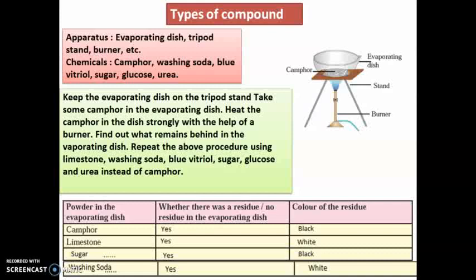First, we heated camphor — there was a residue and it was black in color. Then limestone or washing soda — there was a residue and its color was white. Then sugar — there was a residue and it was black in color. And limestone or another compound also gave a white residue. So mainly, you will observe two colors of residue: black and white.